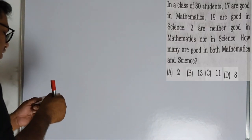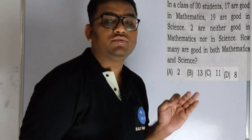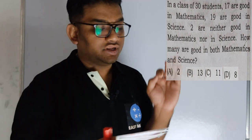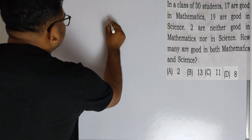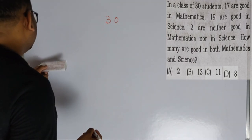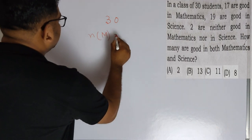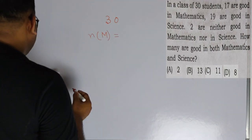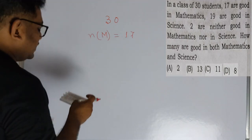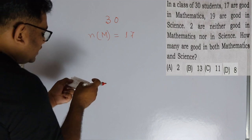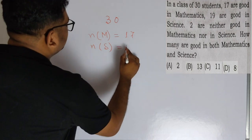Next question. In a class of 30 students, 17 are good in math. Let NM be the number of students good in maths. The question states 19 are good in science — let NS be the number of students good in science. And 2 are neither good in math nor in science.